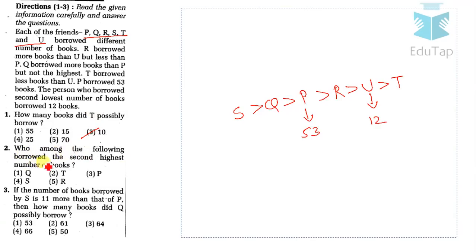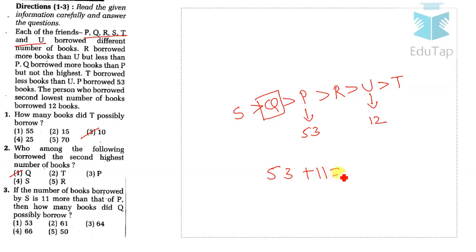Question 2 asks who borrowed the second highest number of books. That is Q, so Q borrowed the second highest. Question 3: if S borrowed 11 more than P, then S borrowed 53 + 11 = 64 books. Q must borrow between 53 and 64, and the only option in that range is 61, so the answer for question 3 is option 2.